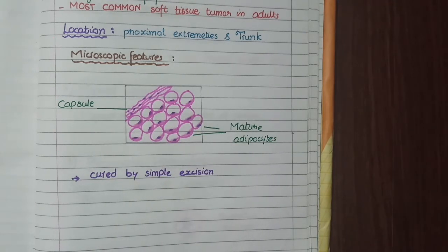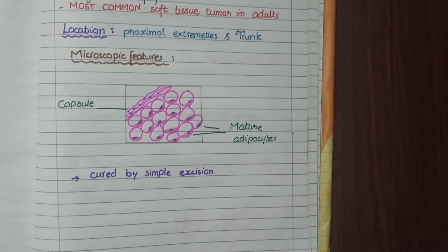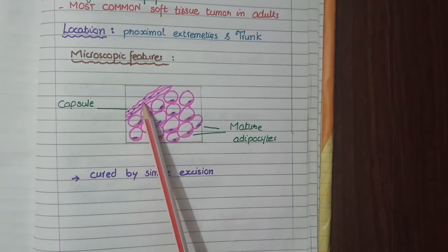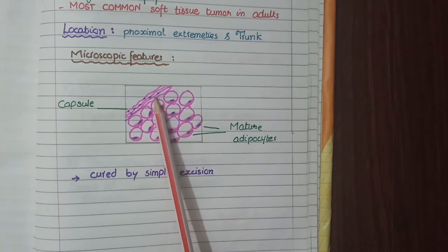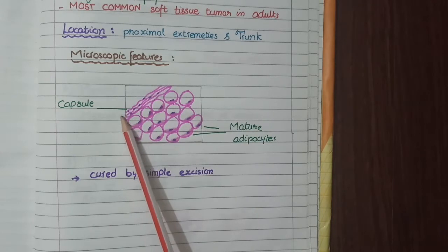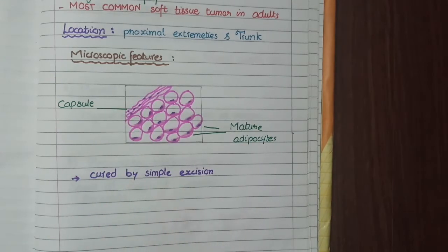As lipoma is a benign tumor and benign tumors do not invade the capsule, you can see in this diagram that the capsule is intact and there is no invasion of the capsule. Lastly, lipomas can be simply cured by simple excision.